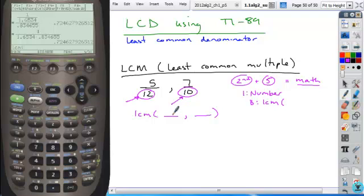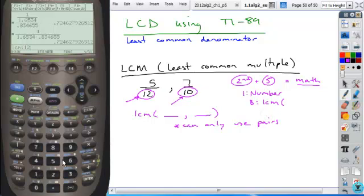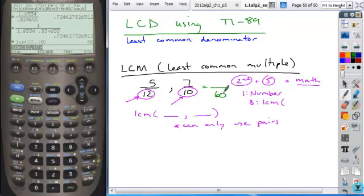And then you're going to enter the two terms that you're finding the LCM. And remember, you can only use pairs for this. So with these two, I can type in 12 comma 10, close it off, hit enter, and I find my LCD. My least common denominator for these is going to be 60.